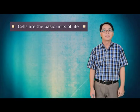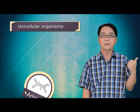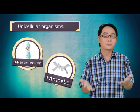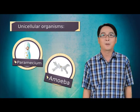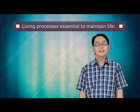All organisms are made up of cells. Cells are the basic units of life. Unicellular organisms such as amoeba and paramecium are small and simple organisms. The one and only cell in the organism can carry out all the living processes essential to maintain life.